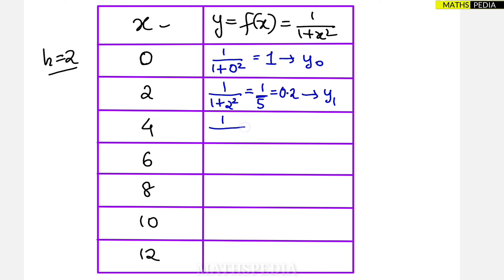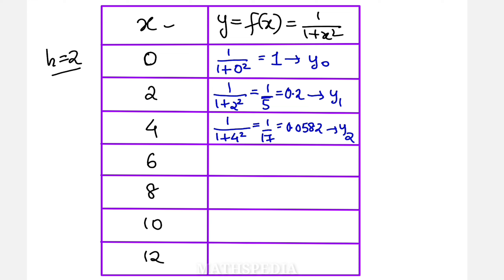1 by 1 plus 4 square, which is equal to 1 by 17, and this is equal to 0.0582, which is y2. Next is 1 by 1 plus 6 square, which is equal to 1 by 37, and this will be equal to 0.02703, and this will be y3.